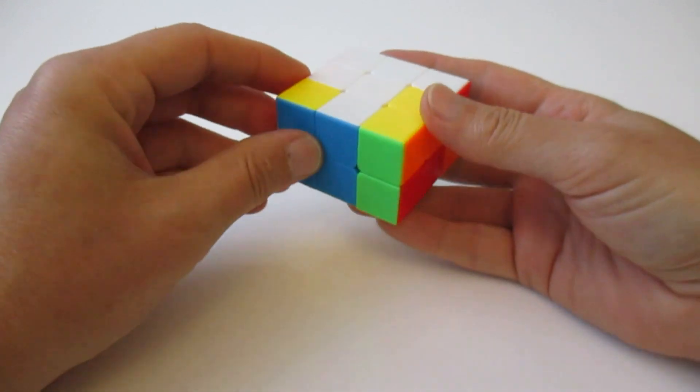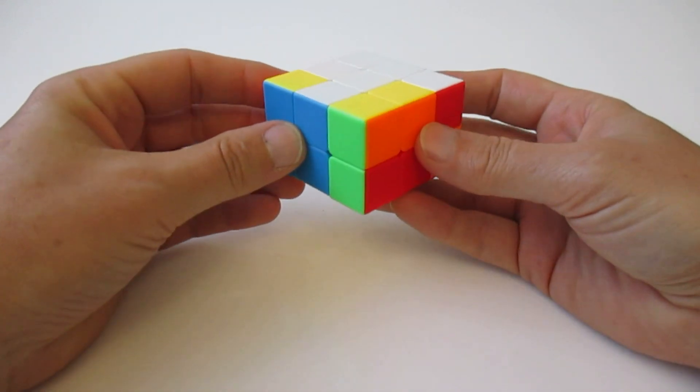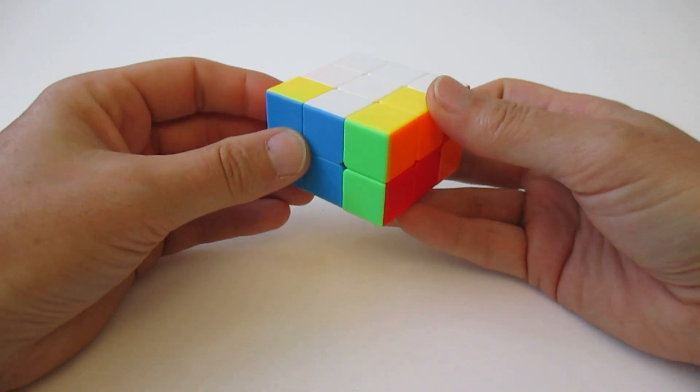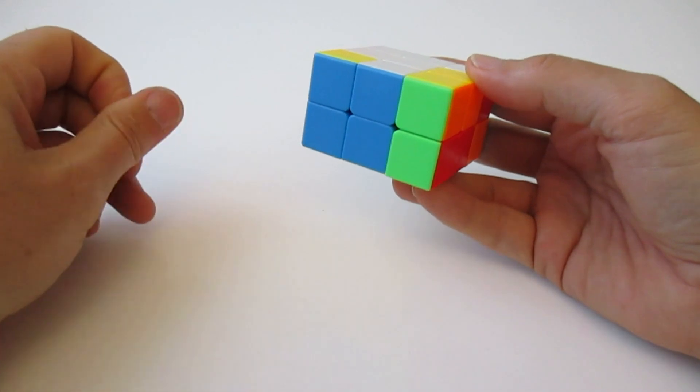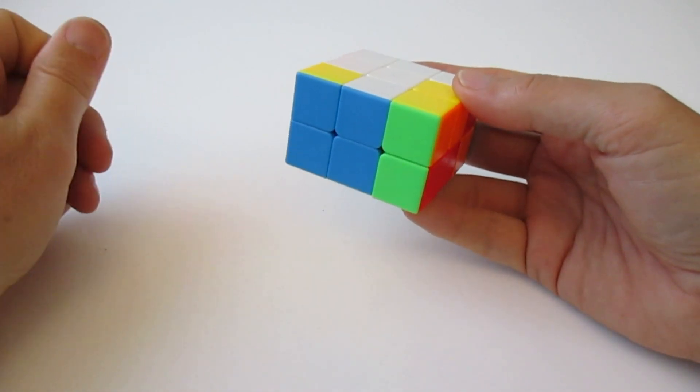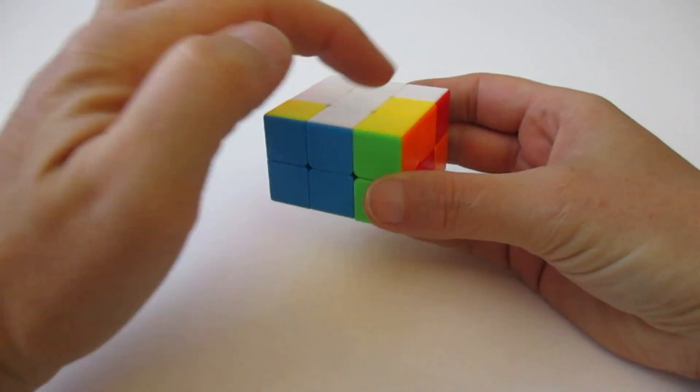I think I figured out a very easy way. You need two algorithms to switch the edges. But step one is to solve all the corners.